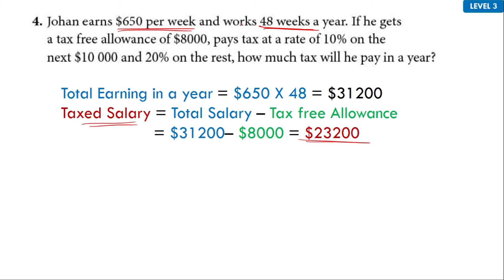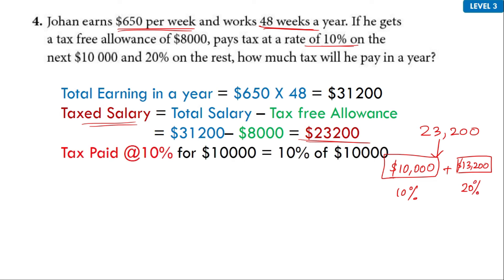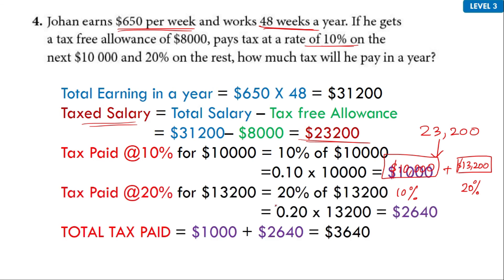Again you have two cases. He has to pay at a rate of 10% on the next $10,000, so the $23,200 is split: for the first $10,000 he pays tax at 10%, and for the remaining $13,200 he pays at 20%. So the total tax paid is $1,000 plus $2,640, giving a total of $3,640.